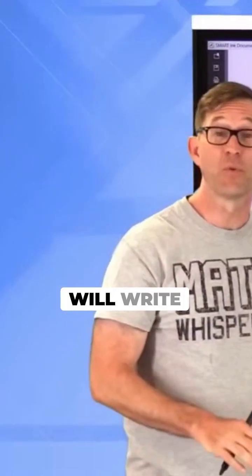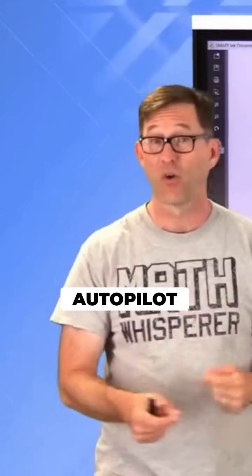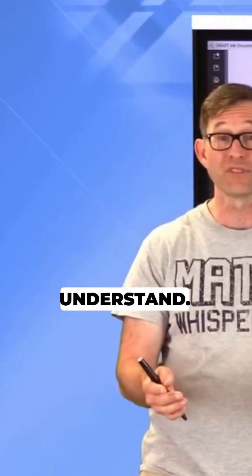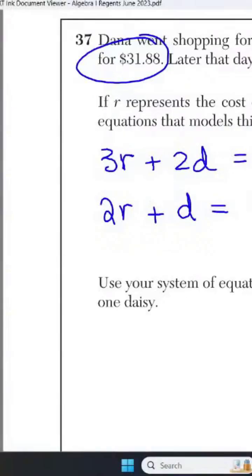Now, some students will write this down and immediately start solving it because they're in this autopilot mode, which I totally understand. But the solution is now going to come here. Use your system of equations to algebraically determine both the cost of one rose and the cost of one daisy.